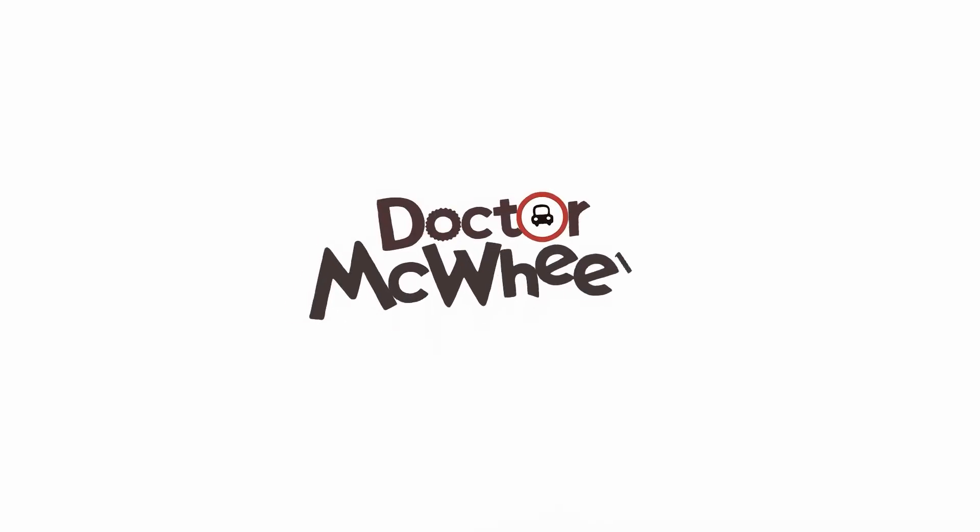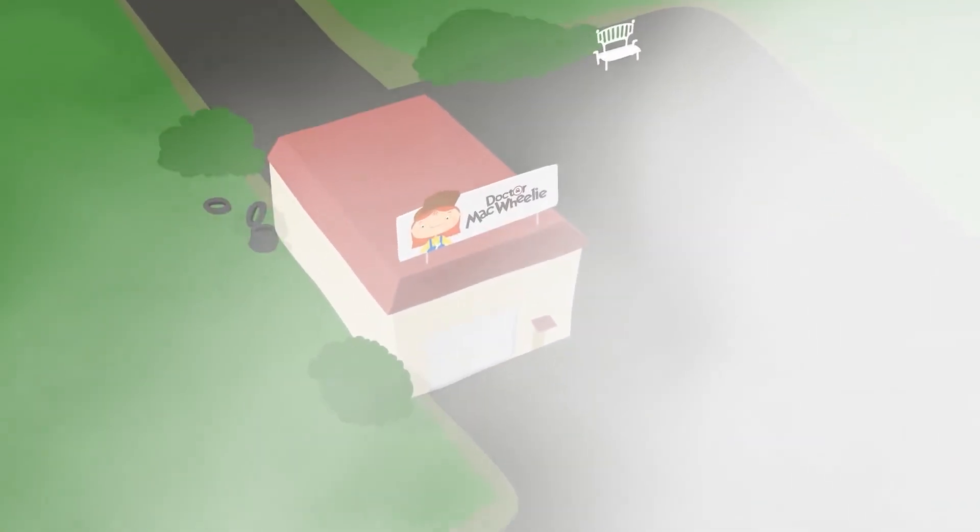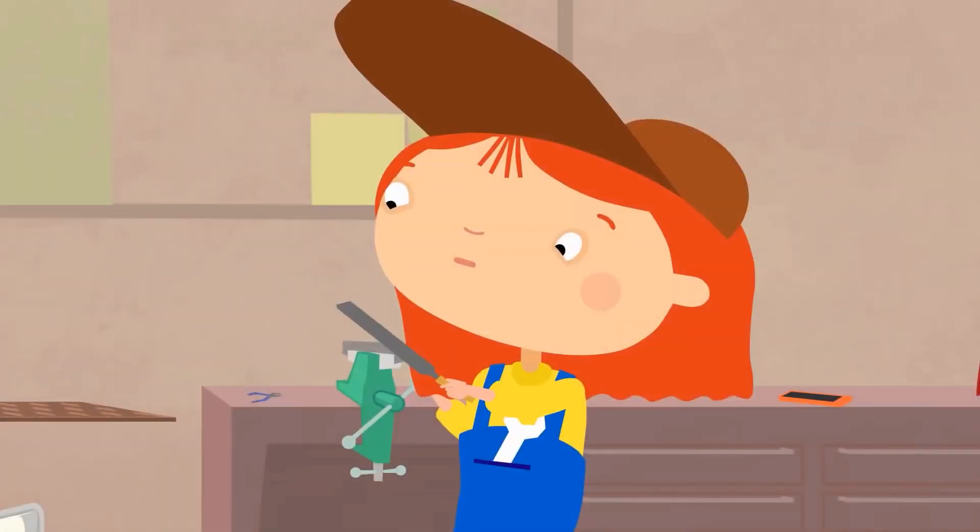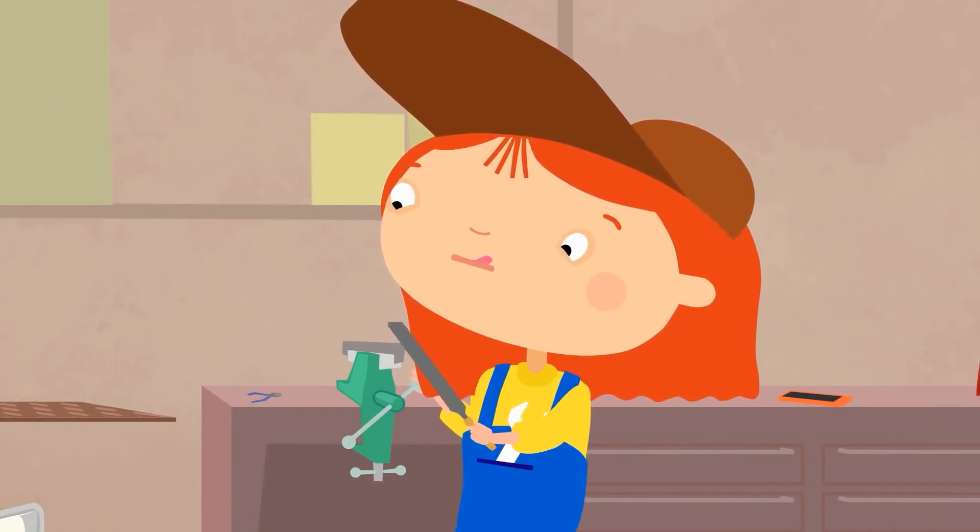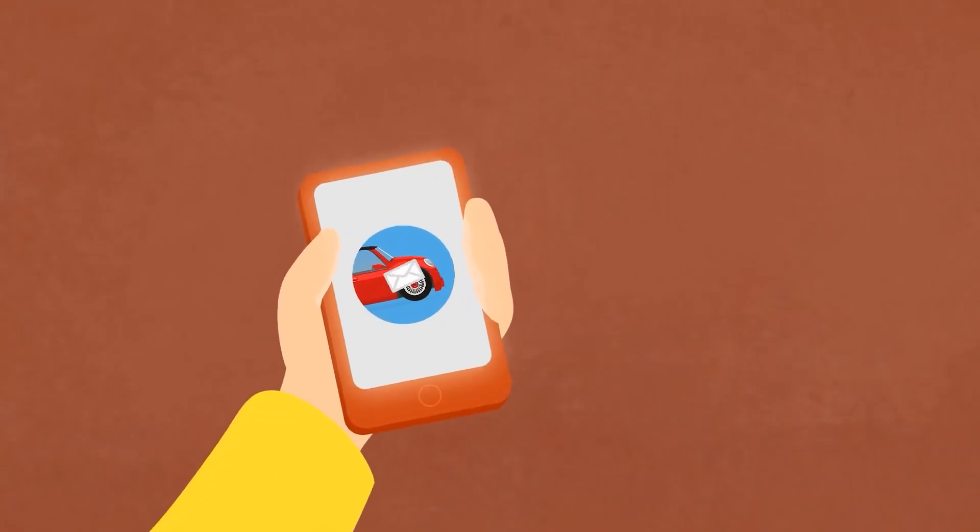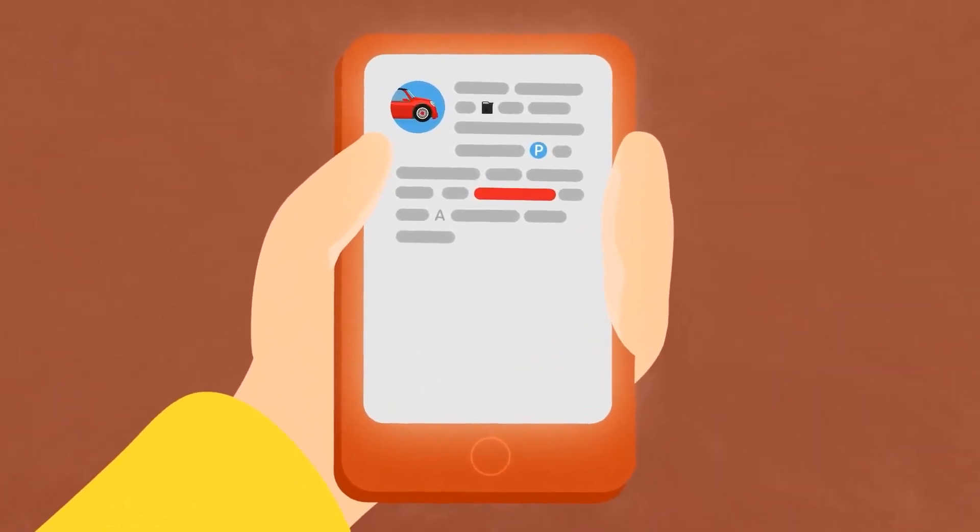Dr. McWheely. This is Dr. McWheely's. Here she is. Oh, she's got a message. Who has sent it? A small red car. Oh! It's run out of fuel. It's stuck in the car park. On the red floor. In the spot with the letter A.